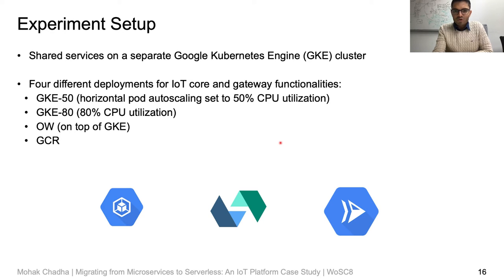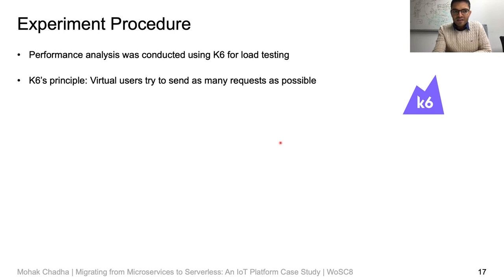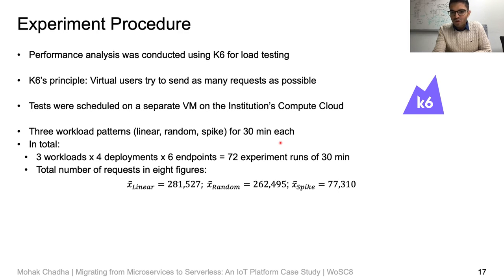Moving on to the experimental setup. All off-the-shelf services were hosted on a separate GKE cluster for fairness. For our experiments, we considered four deployment strategies: Google Kubernetes Engine (GKE) with two configurations for the horizontal pod autoscaler at 50% and 80% CPU utilization, OpenWhisk deployed on top of GKE, and the managed Google Cloud Run service. For load testing, we used the regression testing tool K6 by Grafana Labs, which utilizes virtual users that make HTTP requests. We used a VM hosted on our institute's compute cloud and considered three different workload patterns: linear, random, and spike. The test duration was 30 minutes each, for a total of 72 experiments with requests in the eight figures.